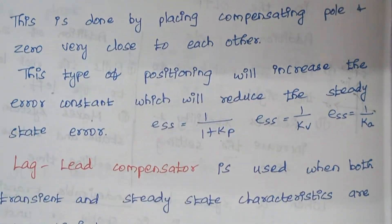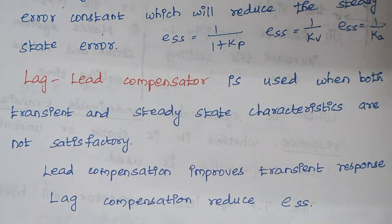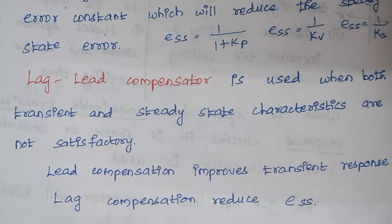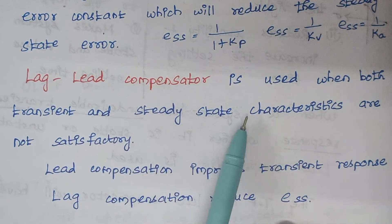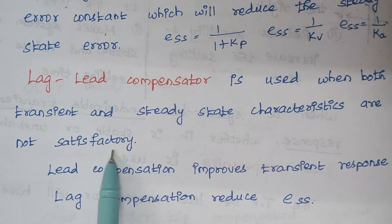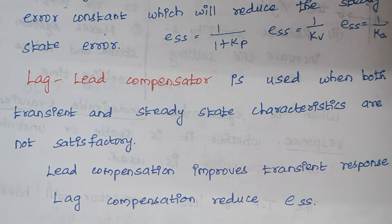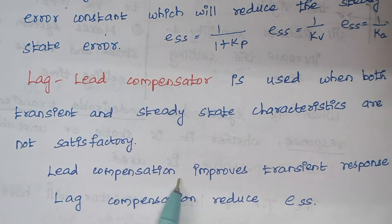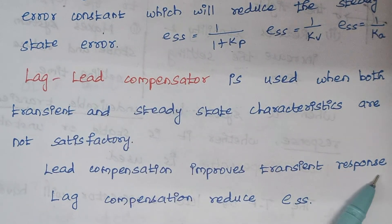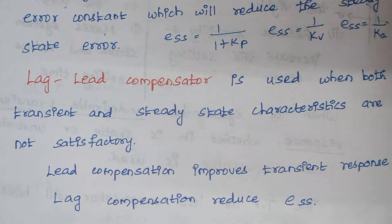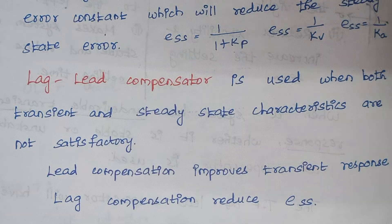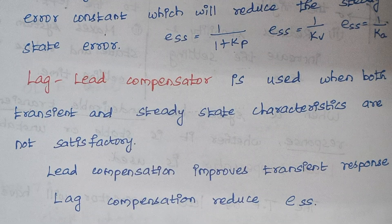Finally, a lag-lead compensator is used when both the transient and steady state characteristics are unsatisfactory. Since the lead compensator improves transient response and the lag compensator reduces steady state error, combining them gives a lag-lead compensator. This is a basic introduction to root locus compensators; a clearer understanding will come when we use these to solve problems. Thank you.